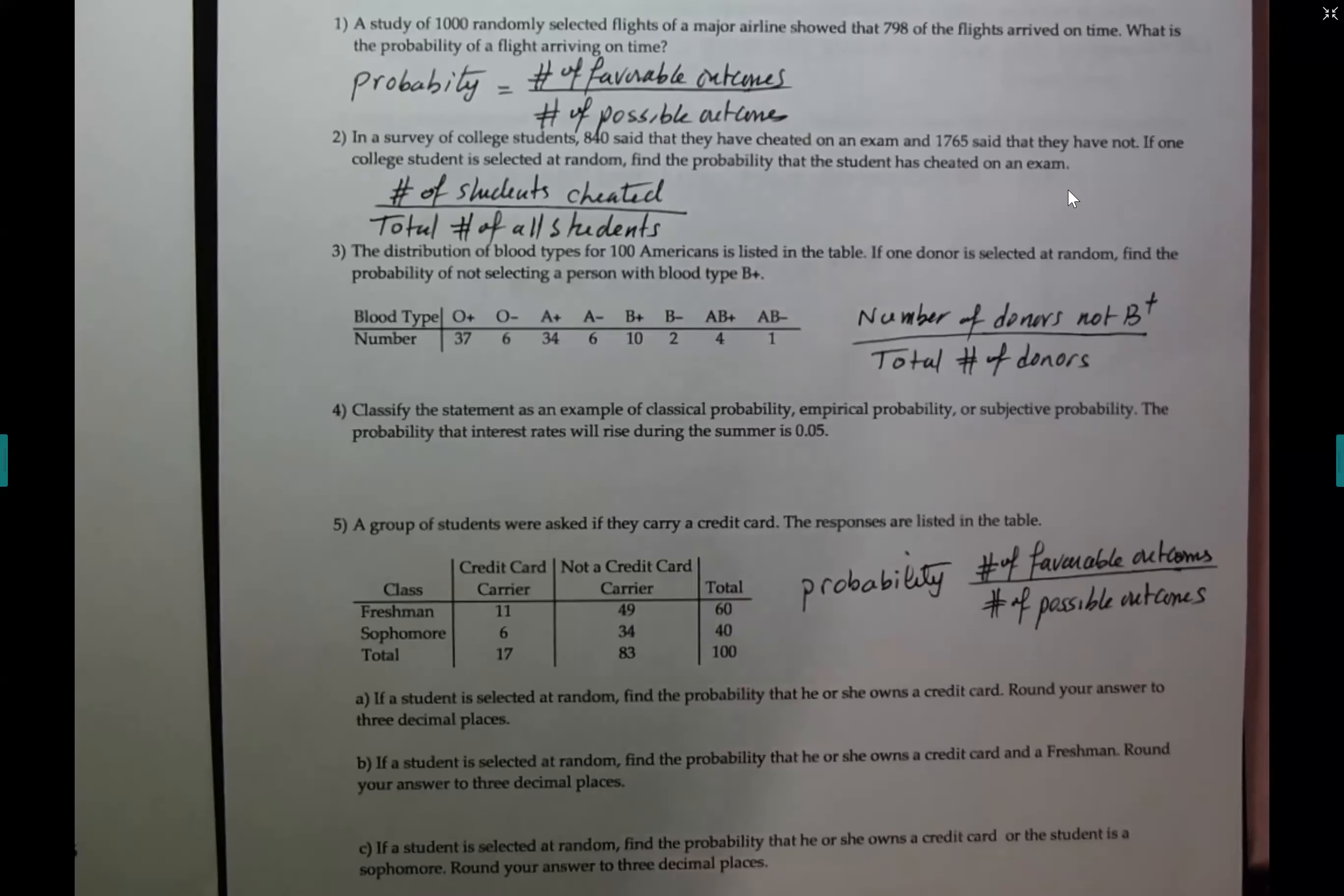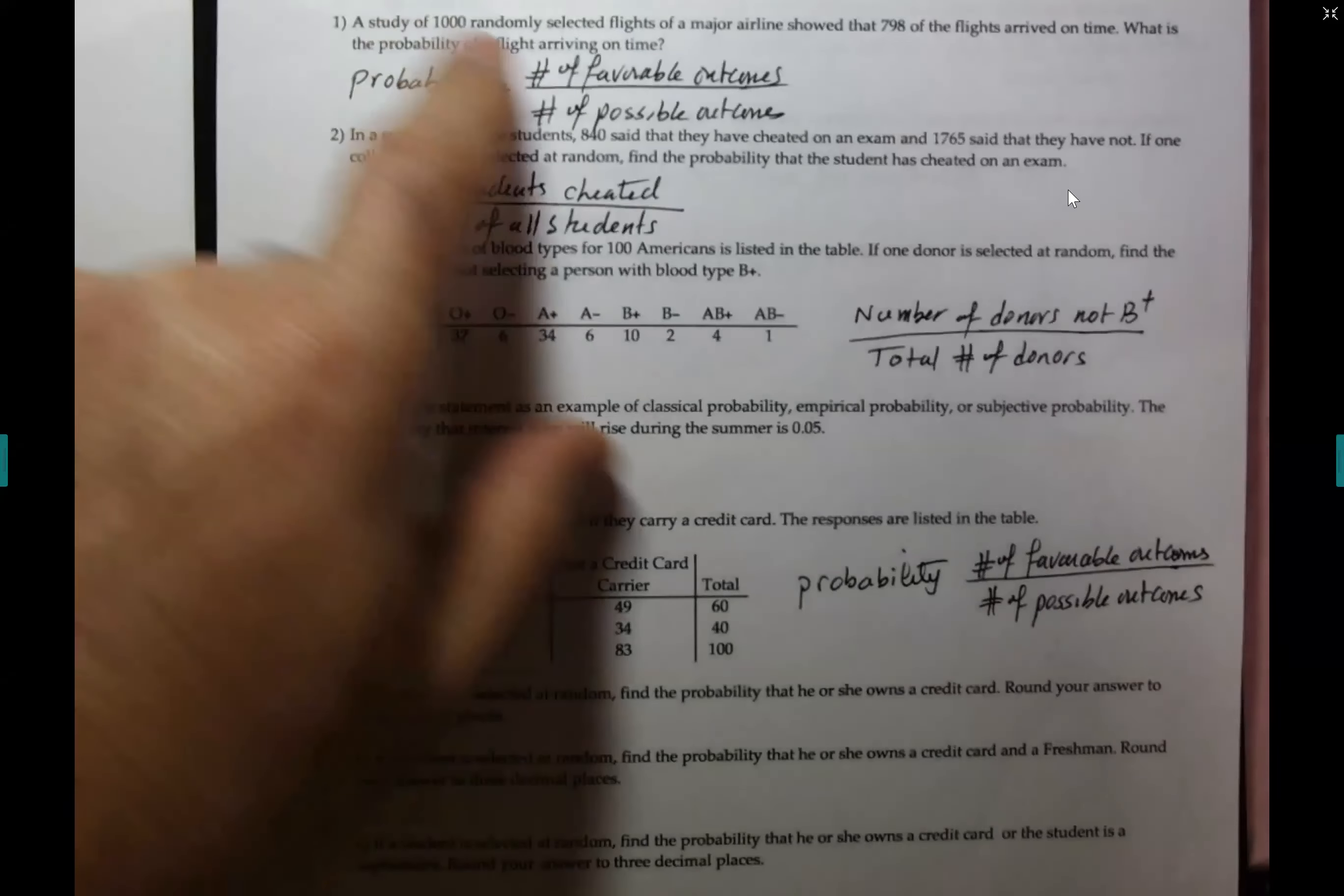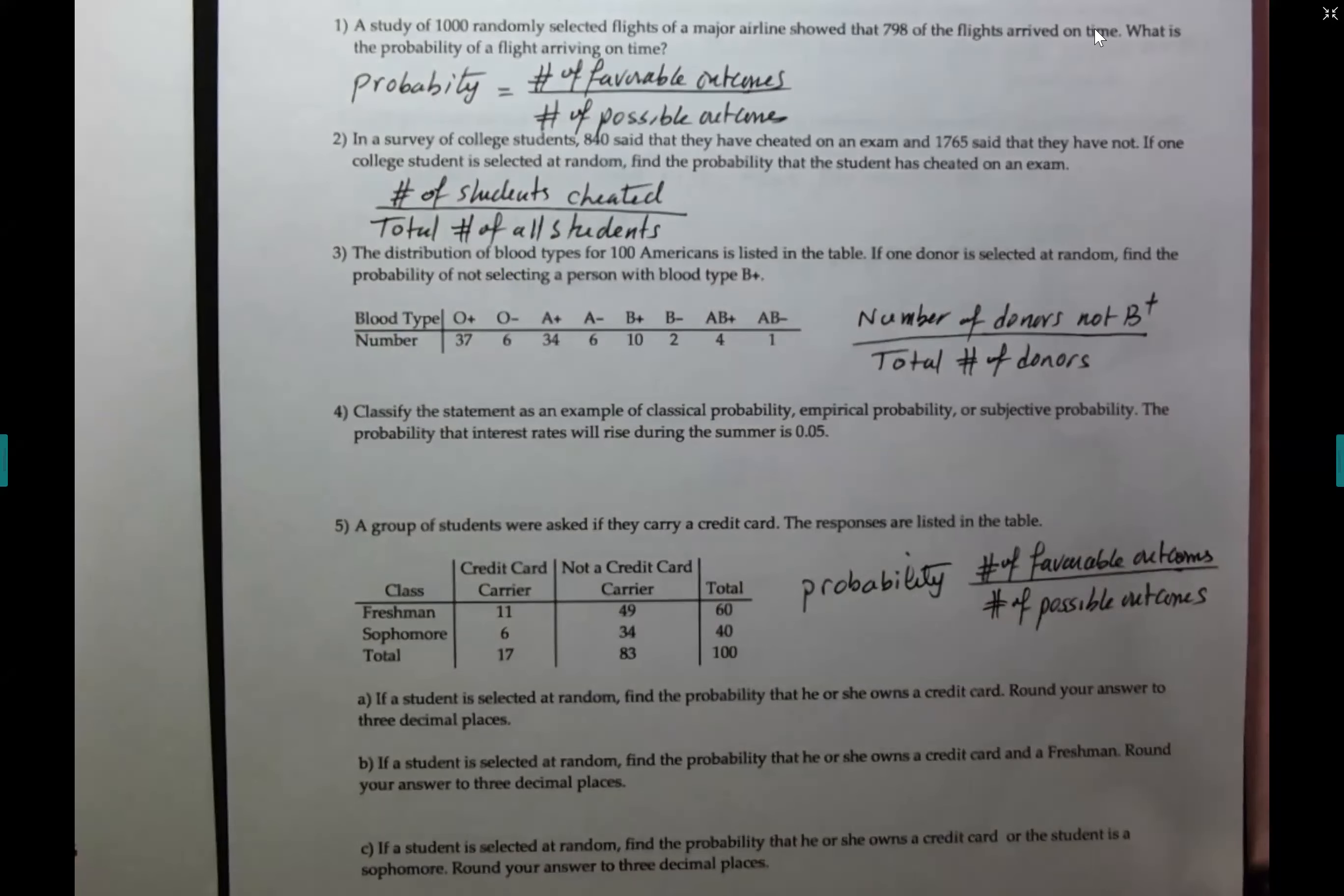Number one, a study of 1000 randomly selected flights of a major airline showed that 798 flights arrive on time. What's the probability that a flight arrive on time? It's favorable outcomes divided by possible outcomes, and 1000 is the denominator, and I think you know what to put in the numerator there.